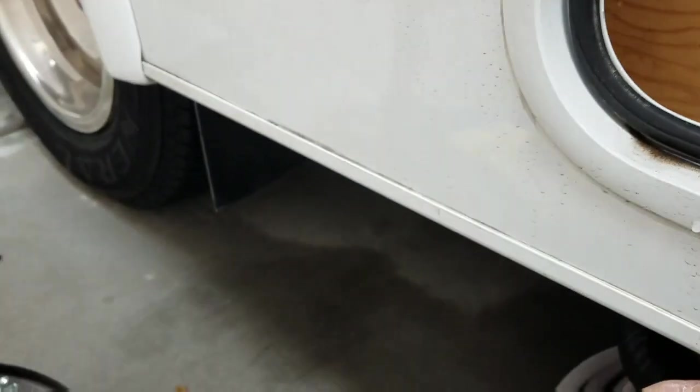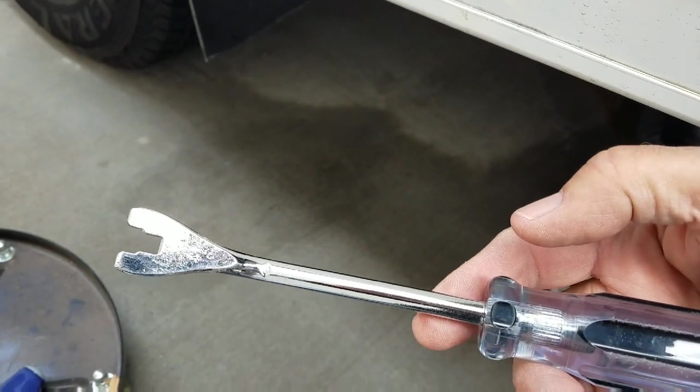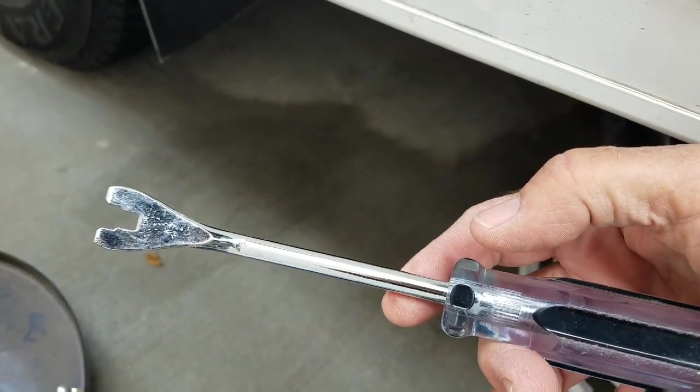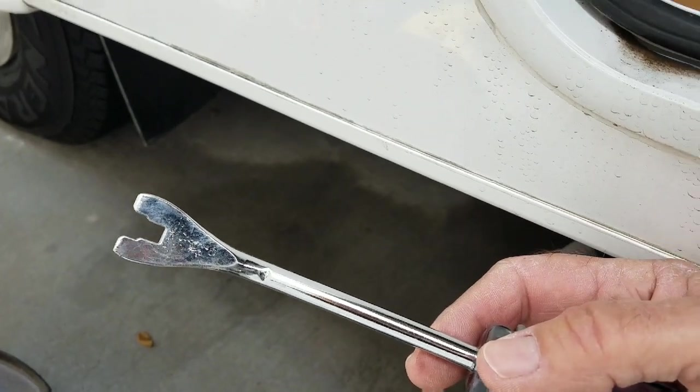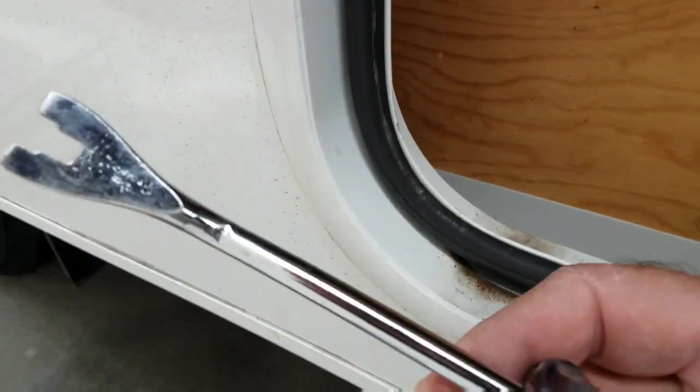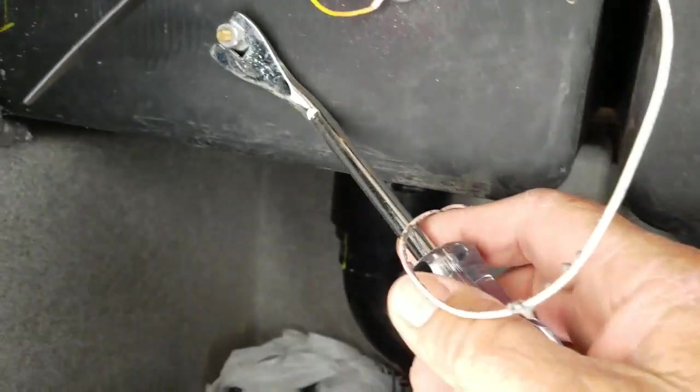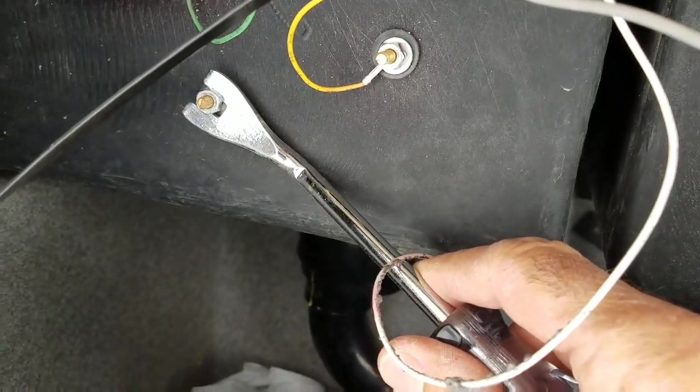I have this tool that's used for popping body rivets, the plastic ones, little Christmas trees and stuff out, so I want to see if I can use this to get that out of there.